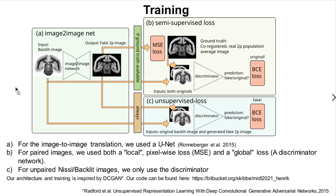Here you can see a sketch of the training. We use a U-Net to map the bright-field image to fake two-photon images, or in the case of Nissl, the Nissl image to fake two-photon images. During training we have two different scenarios: in the first, we train the network in a supervised way based on training image pairs obtained during image registration, using a mean square error loss. We also use the typical GAN training approach to train the network in an unsupervised way, and both are done simultaneously.